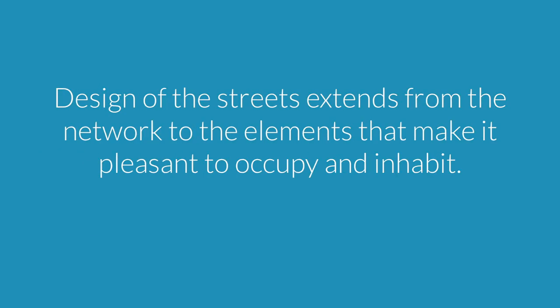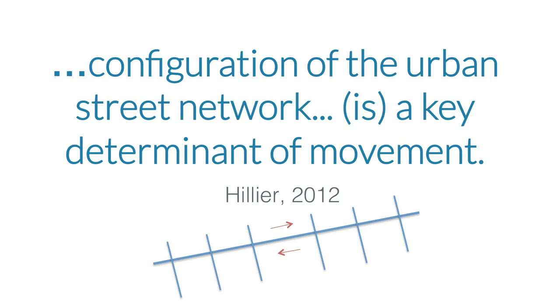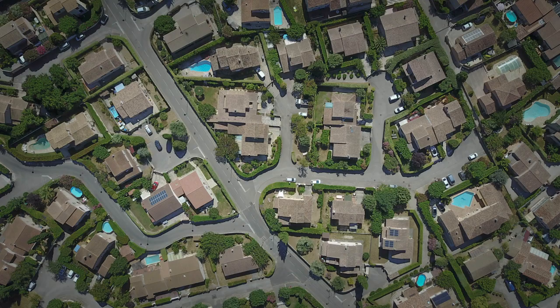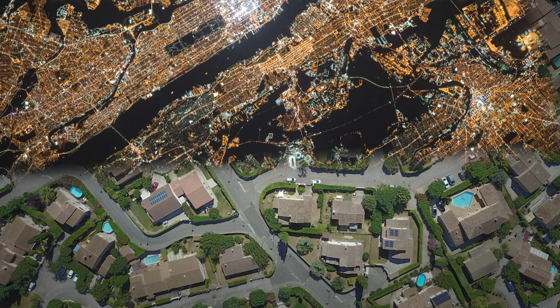Now let's focus on the design of the street. It's important to note that it's not just the streetscape elements that make it pleasant — the configuration of the urban street network and the typology of the road is a key determinant of movement. While this is founded in theory, for example that of Hillier, it's easily depicted in the networks we've shown. Here's the grid of Manhattan in greater New York. As opposed to the suburban grid, you can clearly see the differences: one facilitates bicycle and pedestrian travel via the network; the other is more suburban.